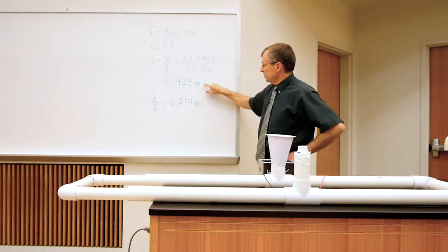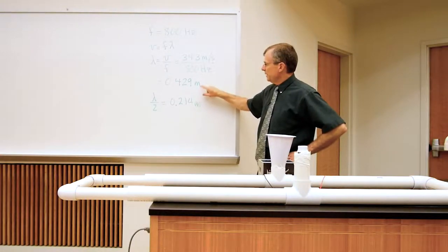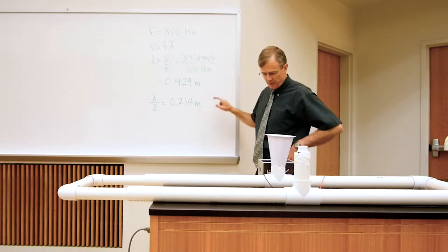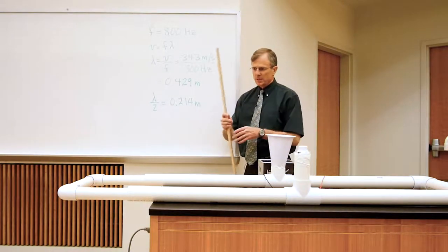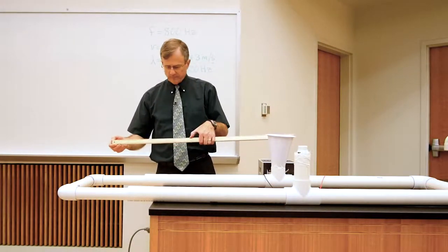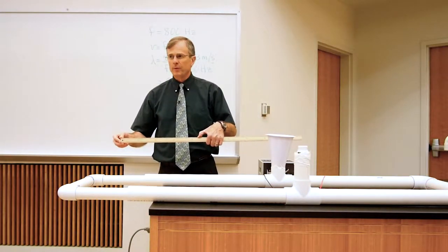Divide those out and you get 0.429 meters or roughly 43 centimeters. So the wavelength that we're talking about here is about from here to here, about 43 centimeters.